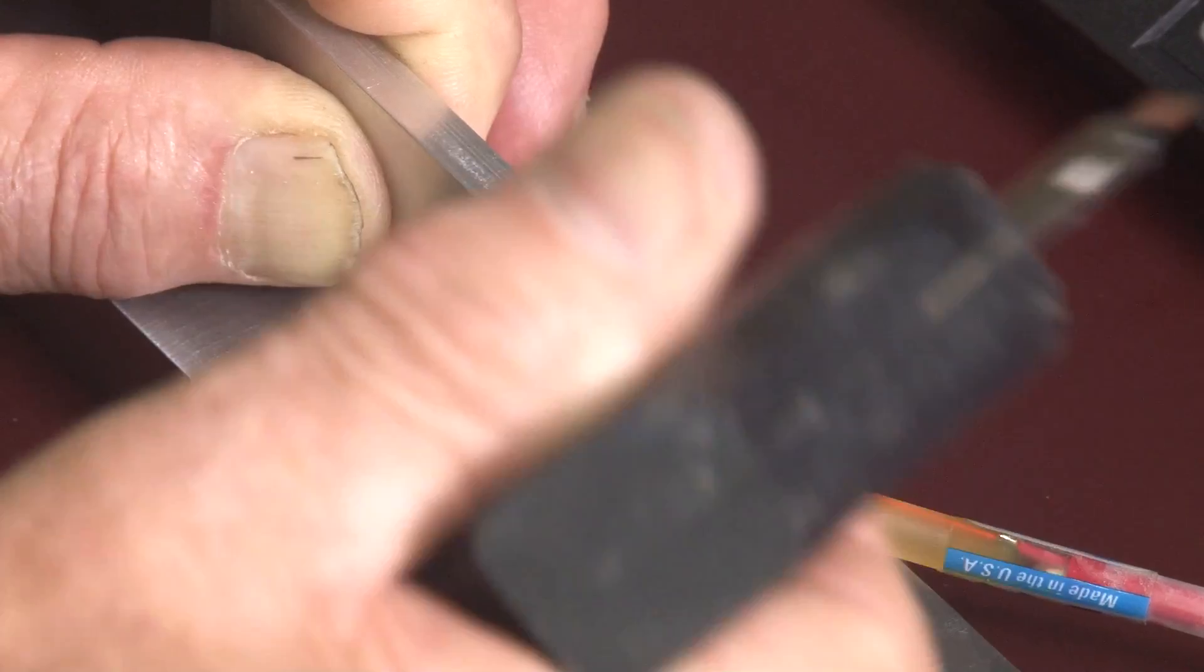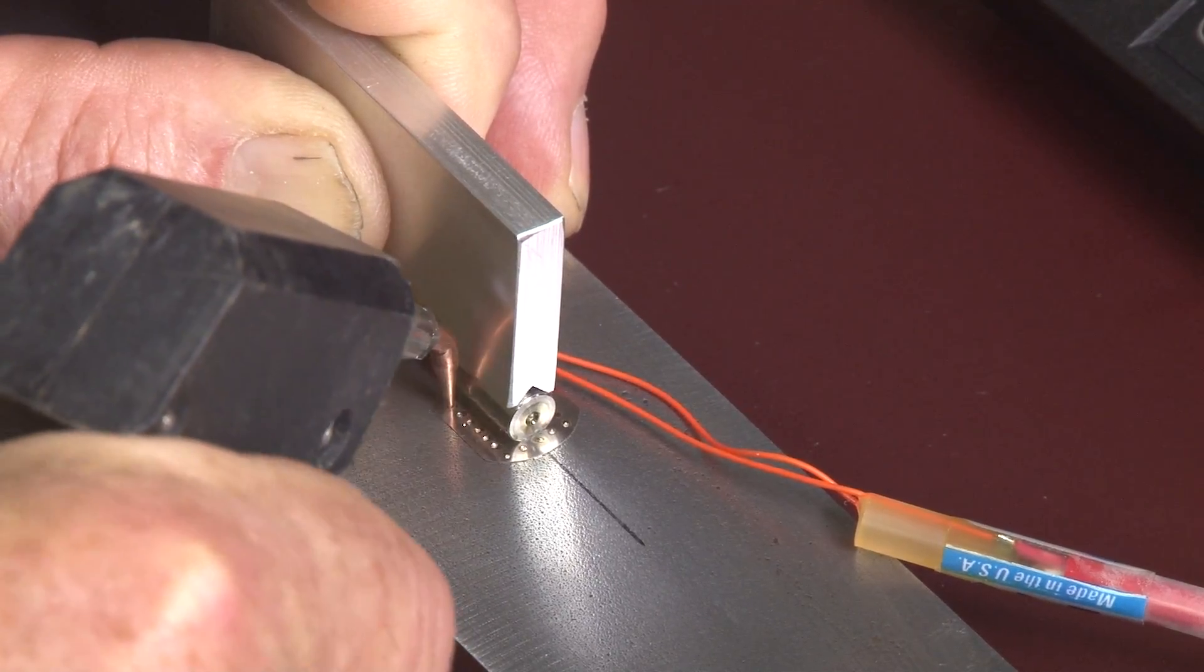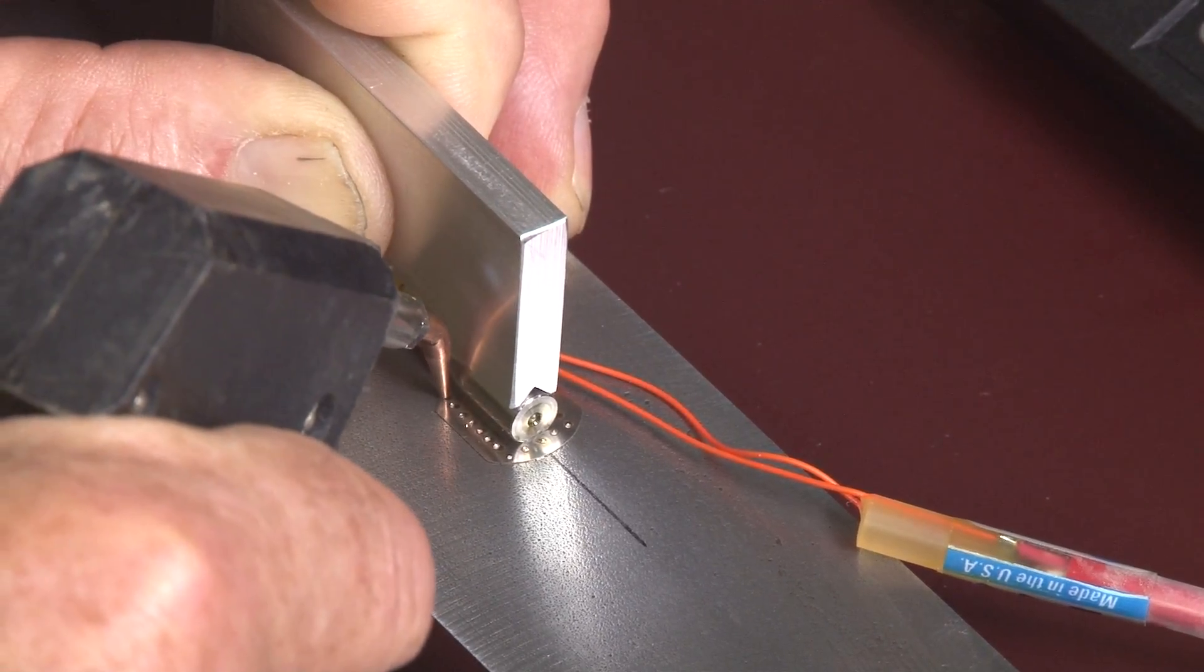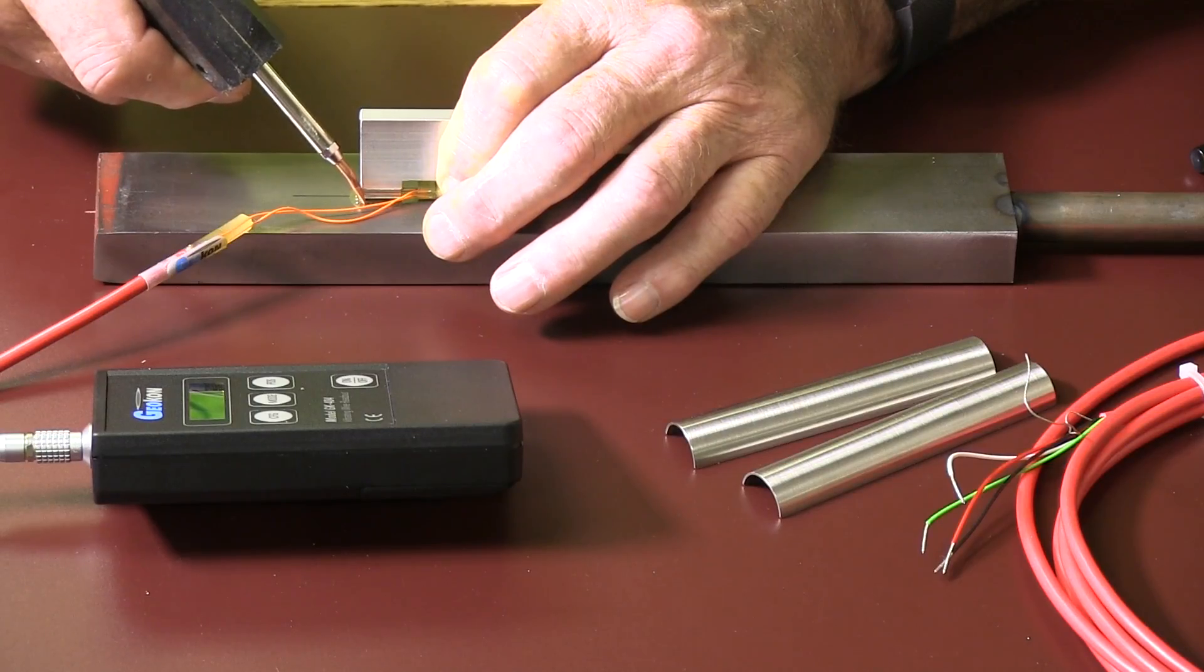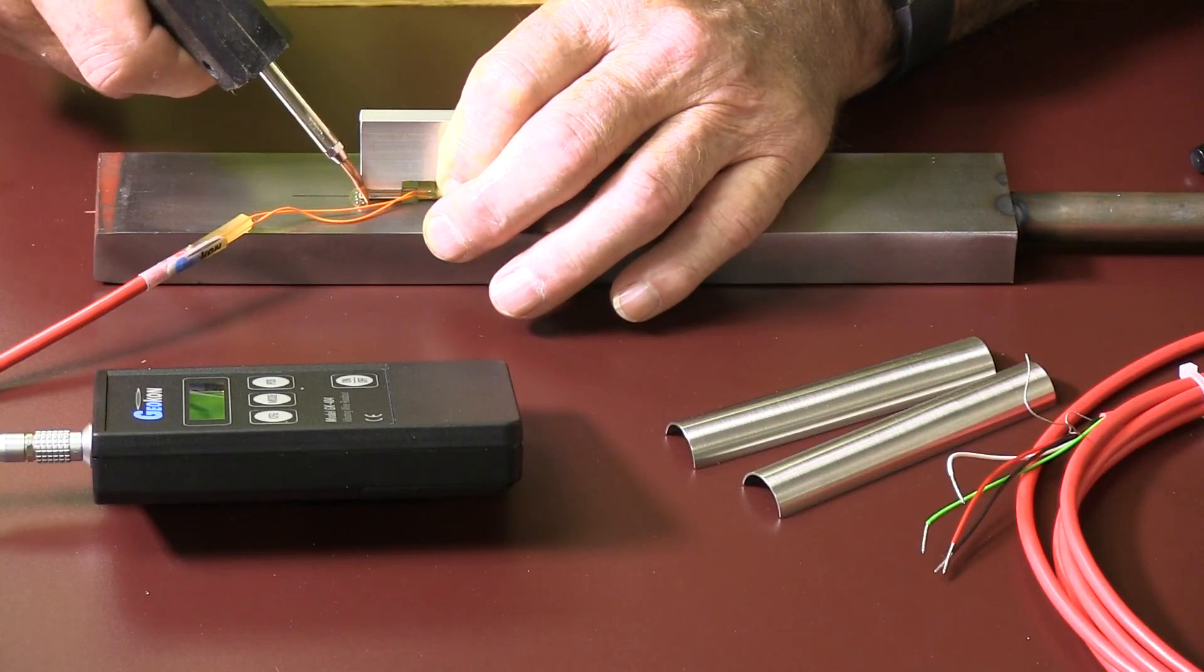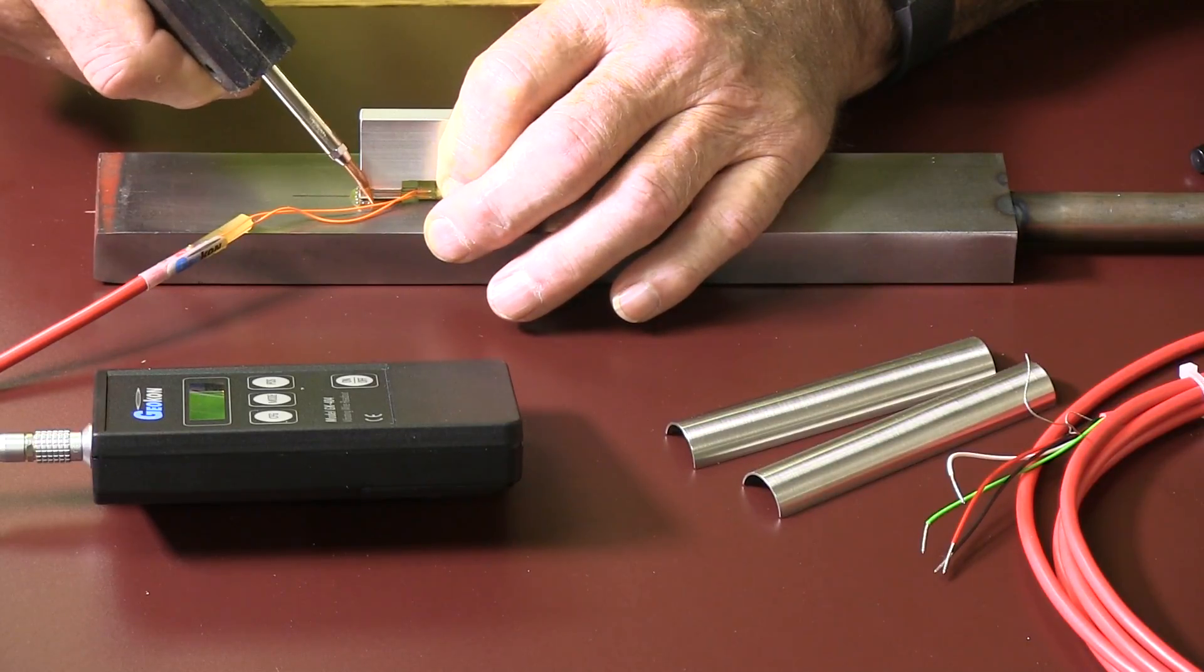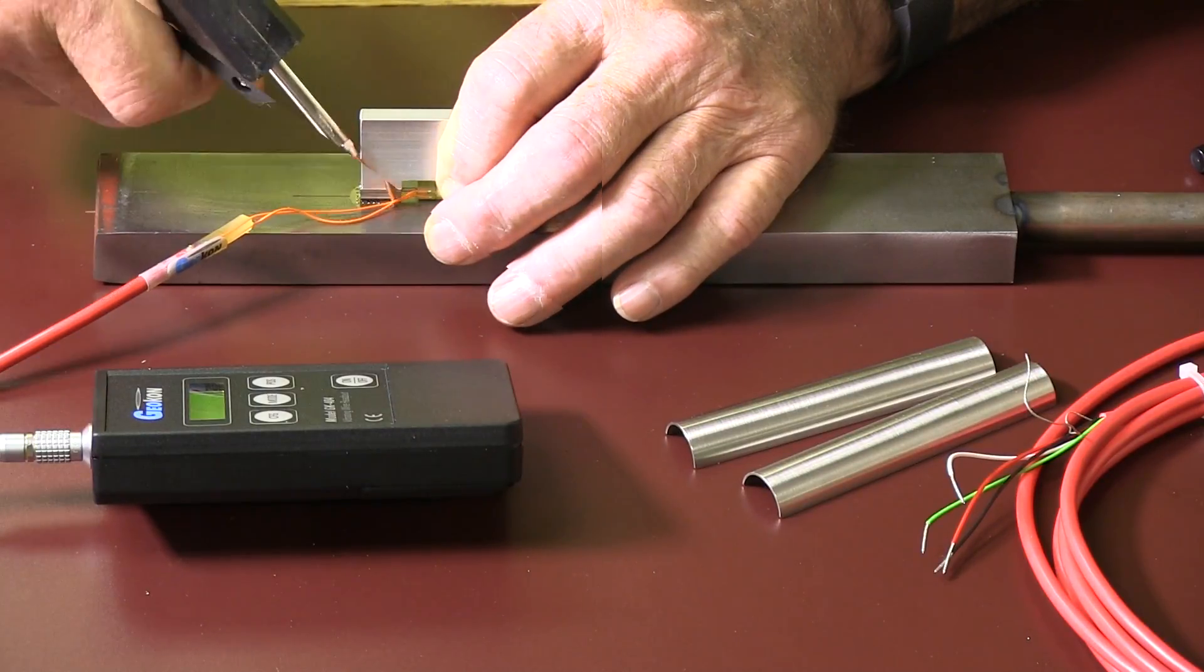The welder is trigger operated, so the idea is to put a fair amount of pressure before you pull the trigger, because if you don't, you can get a surprise explosion. Not really an explosion, but a pop that will put a hole in the tab.